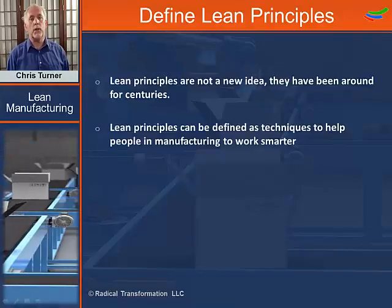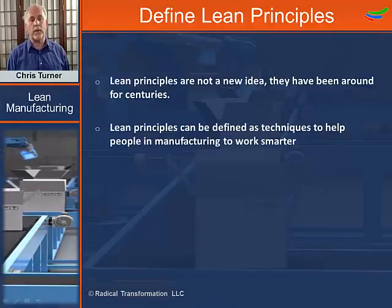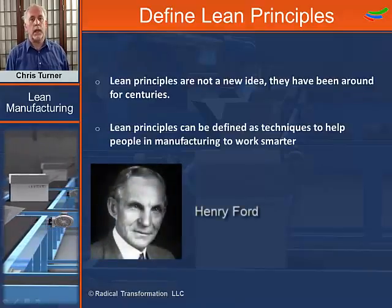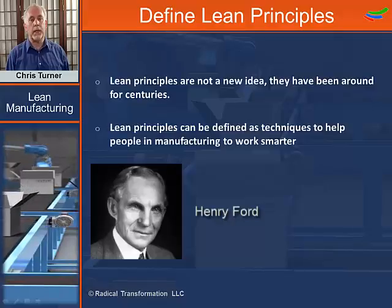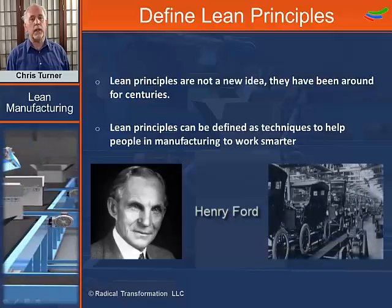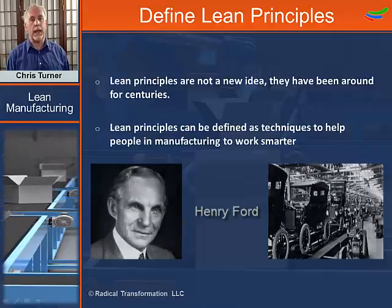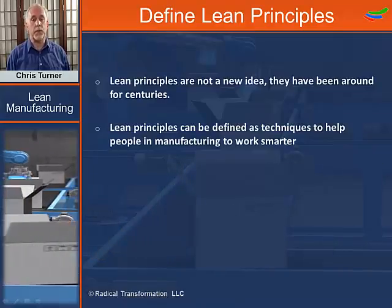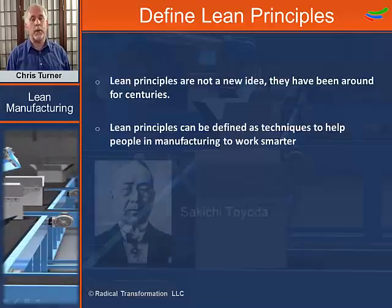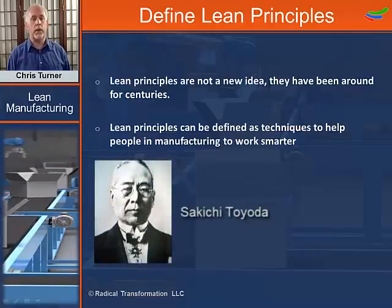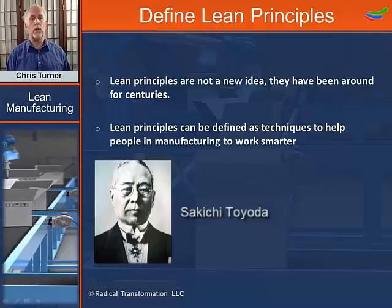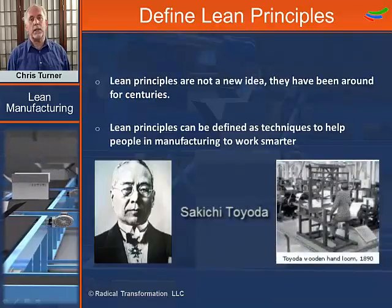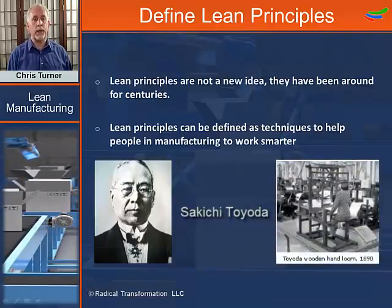Lean principles really started to come to the forefront as the world entered the Industrial Revolution in the early 20th century. Henry Ford developed and introduced many of the lean concepts that we now see being applied today throughout the world's auto industry and many other industries. Around the same time period, Saikichi Toyota was developing his own lean concepts, which led to the design of the world's first automated loom in his factory in Japan.